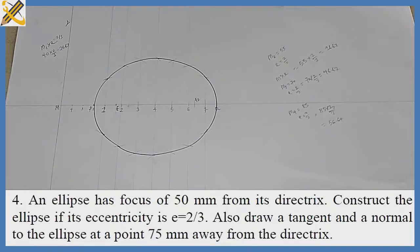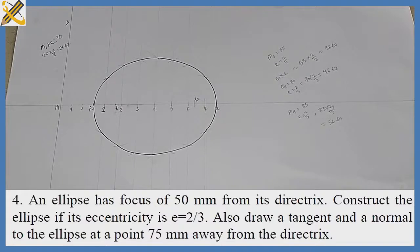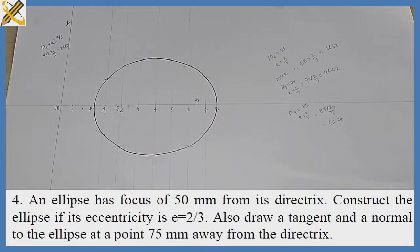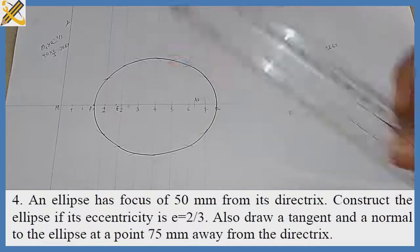Back to the question: we should draw a tangent and a normal to the ellipse at a point 75 millimeters away from the directrice. A tangent is a straight line touching the circumference or a curve at any point externally. Based on this question, we do that at the point 75mm away from the directrice.